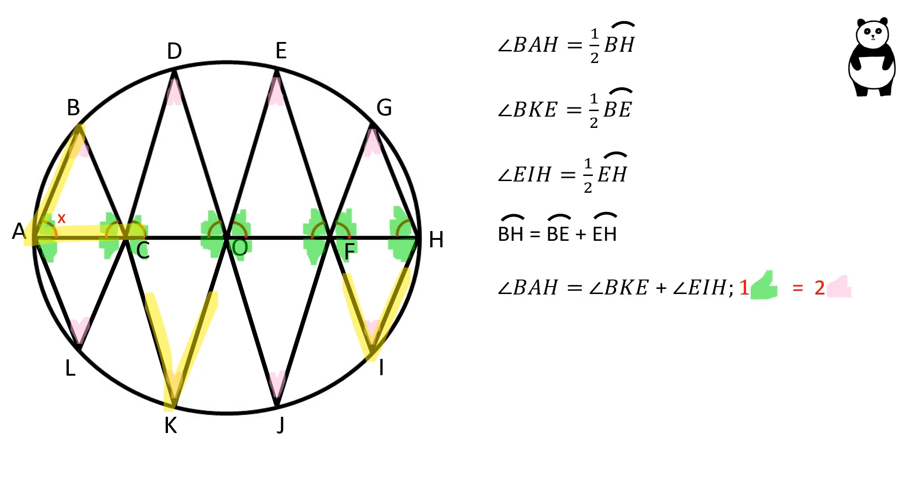One green angle is equal to two pink angles. Therefore, one pink angle is half the value of a green angle.